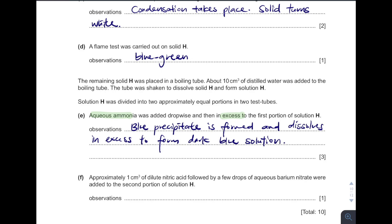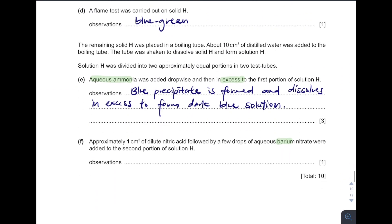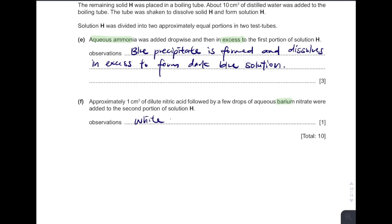And then you see the word barium. Remember, whenever you see the word barium, 100%, they are testing for sulfate. Is there any sulfate? Yes. So it produces barium sulfate with the observations of white precipitate is formed.